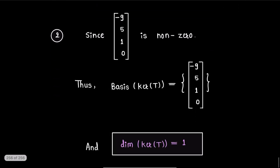Next, we need to find dimension of the kernel T. Now, observe that this vector, which is the column vector [-9, 5, 1, 0] is non-zero, and we know that every single non-zero vector is always linearly independent.